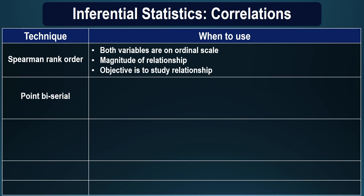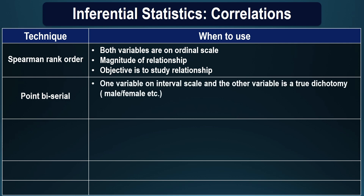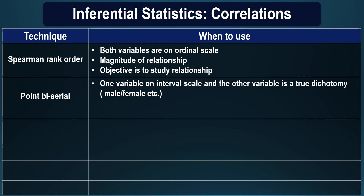Point biserial correlation needs to be calculated when one variable is on interval scale and the other variable is a true dichotomy. For example, if you have male and female groups with their scores on an aptitude test and you want to establish the relationship between gender and aptitude possessed, you can apply point biserial correlation. It is used where you are interested in finding out the magnitude of relationship.